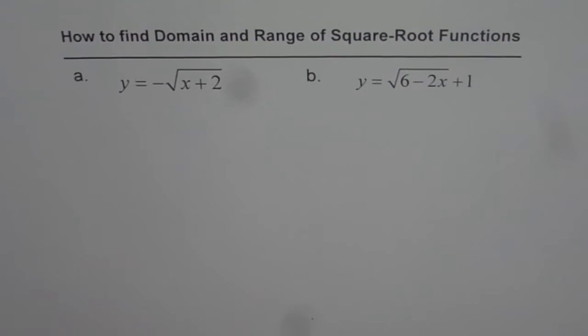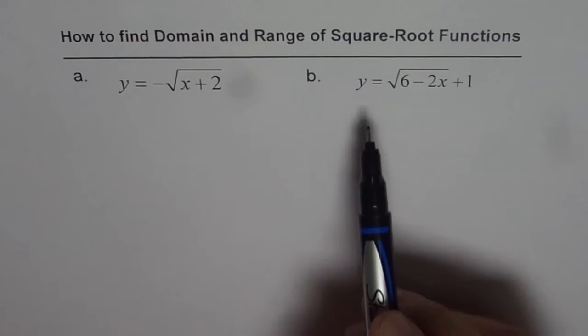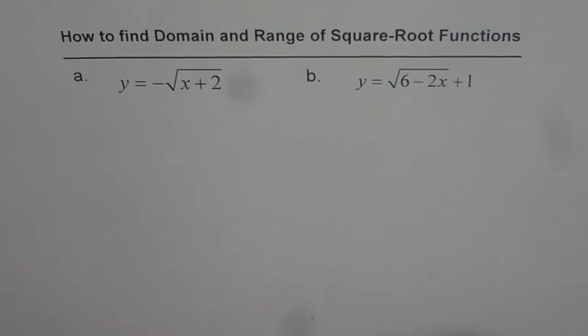Let us understand how to find domain and range of square root functions. We have two examples here. A is y equals minus square root of x plus 2, and B is y equals square root of 6 minus 2x plus 1.